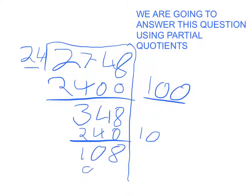I'm going to put 4 here because 4 times 24 is 96. So now I add them all up. Well, first we have to minus this. 108 minus 96, which equals 12.